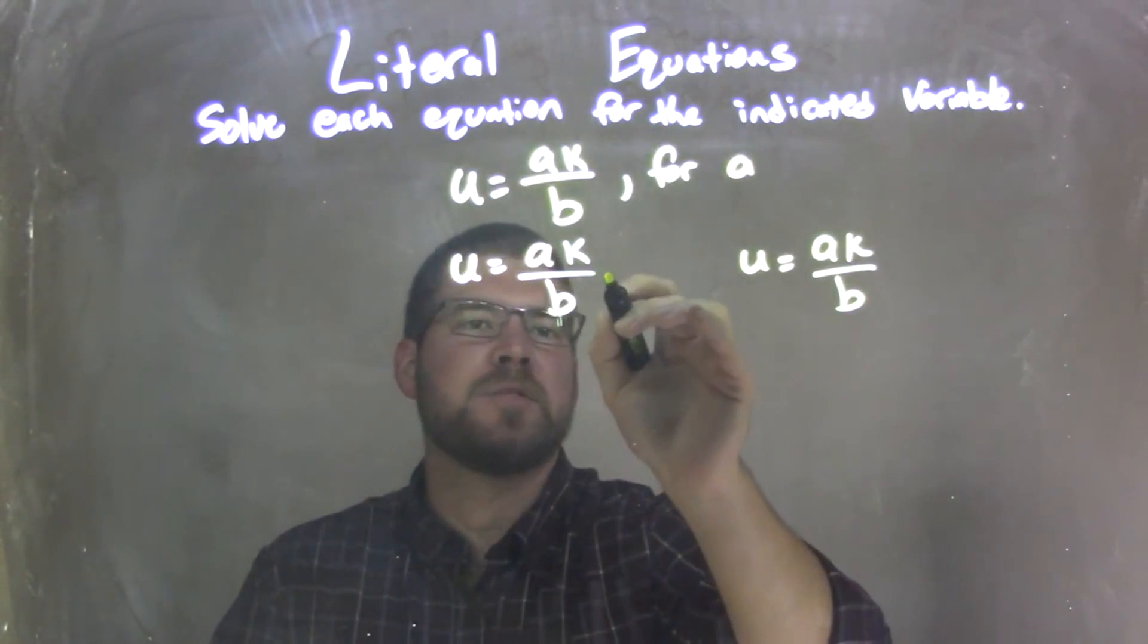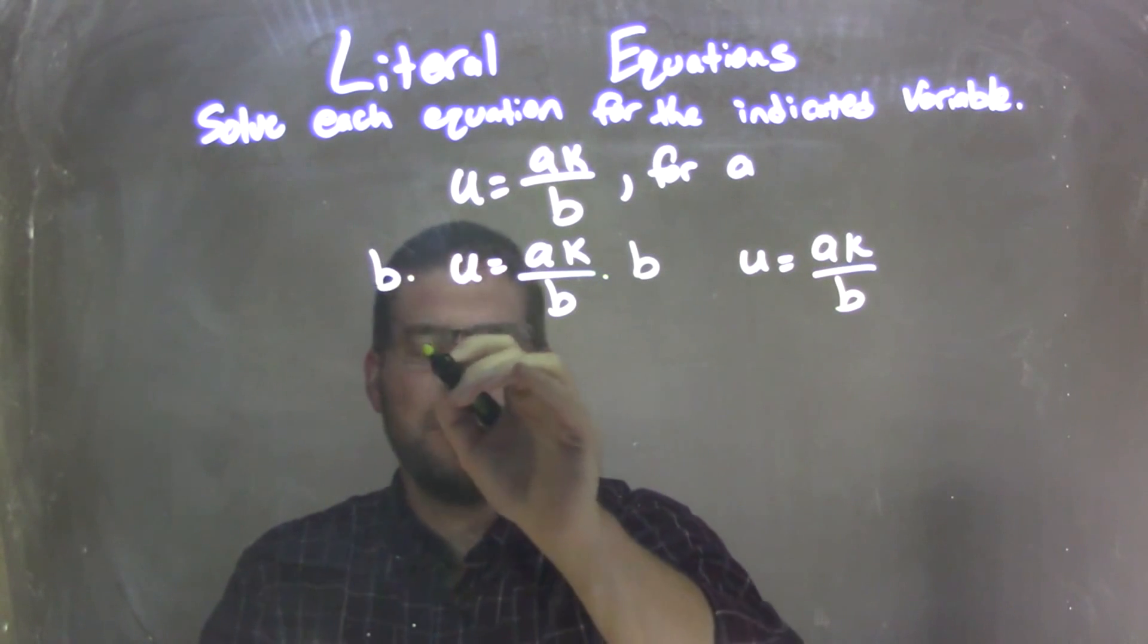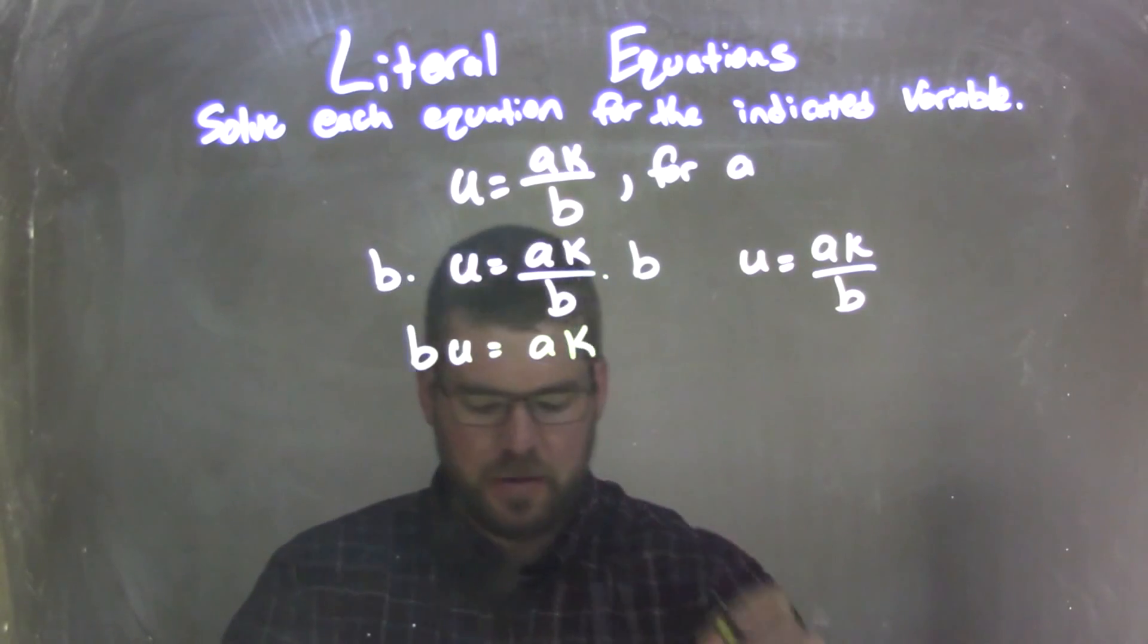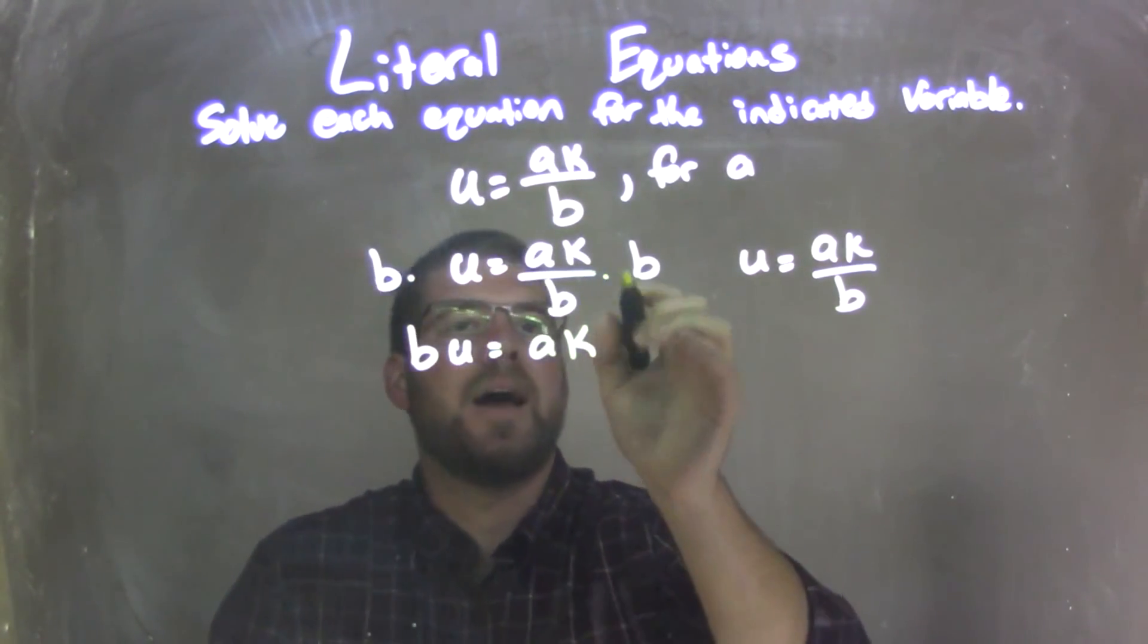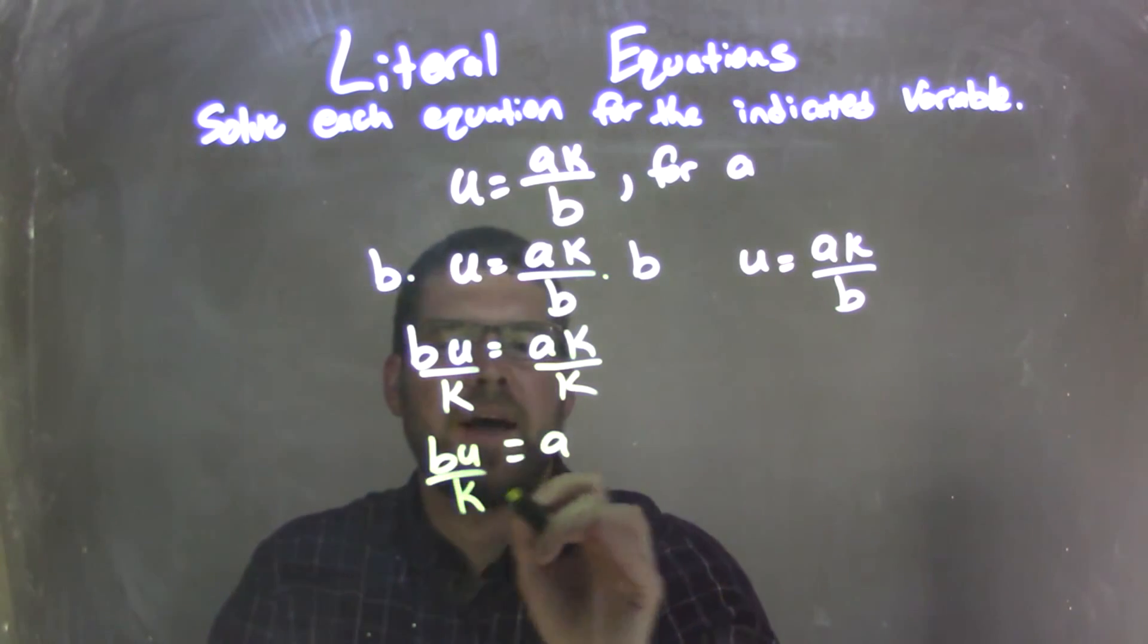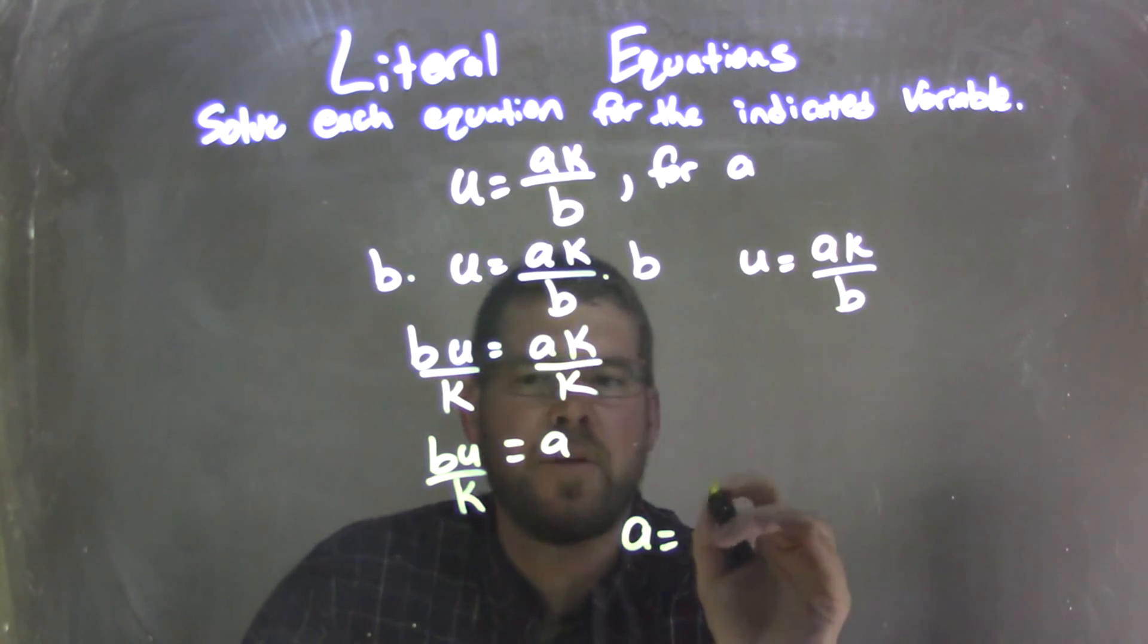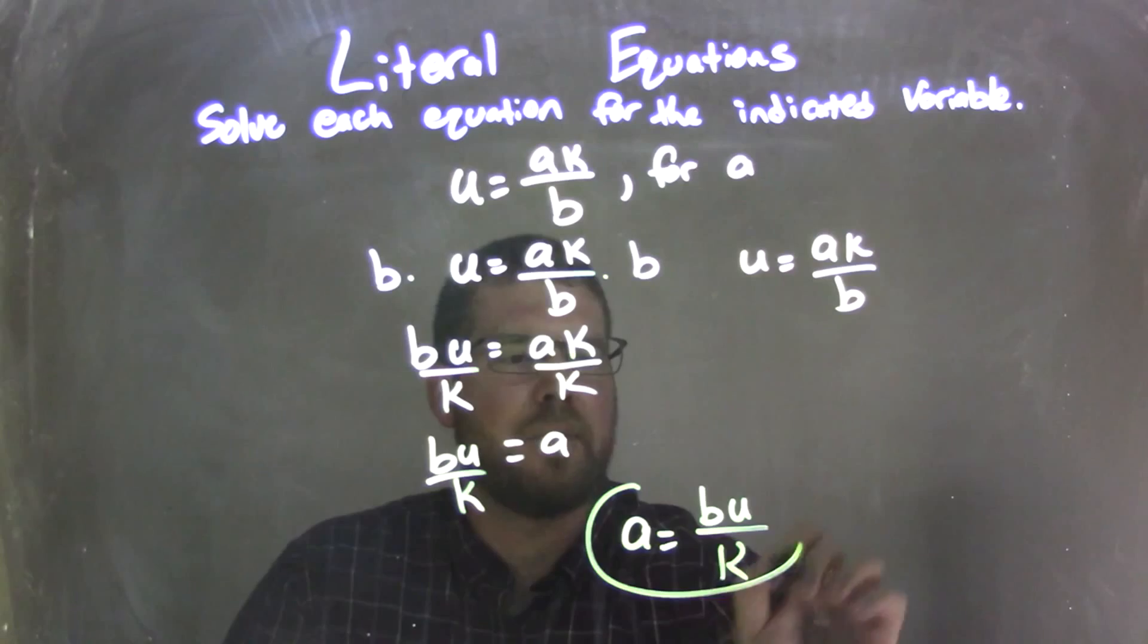I can first, right here, just multiply both sides by B. Multiply by B leaves me with BU equals AK. Then I need to divide by K on both sides. That leaves me with A equals on the right, and BU over K on the left. And so I can rewrite this to have A come first, and A equals BU over K. And there we go. Pretty simple, right?